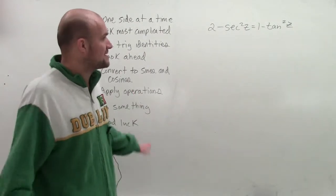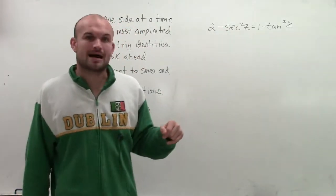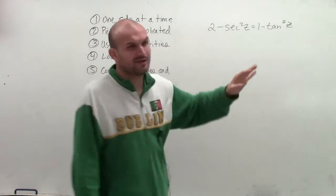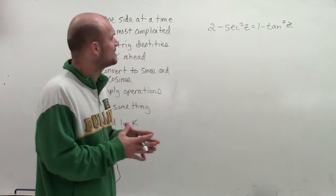And what you kind of want to say is the most complicated really depends on you. I'm going to say the left side is going to be more complicated for me because I know that secant, I can use my Pythagorean identities for it.